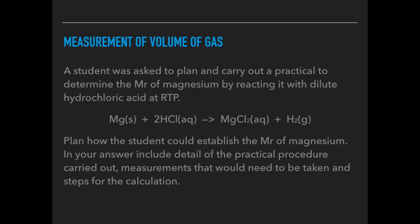If we have a look at measurement of volume of gas now. The student was asked to plan and carry out a practical to determine the Mr of magnesium by reacting it with dilute hydrochloric acid at RTP. There's the reaction equation: Mg(s) + 2HCl(aq) → MgCl(aq) + H2(g). Plan how the student could establish the Mr of magnesium. In the answer, include detail of the practical procedure that would need to be carried out, any measurements that need to be taken, and steps for the calculation. Pause the video, have a go, and then play on and we'll go through the answers.